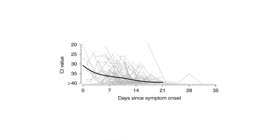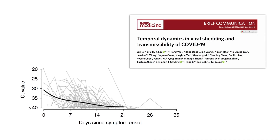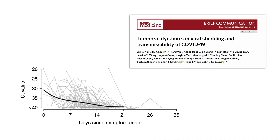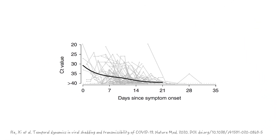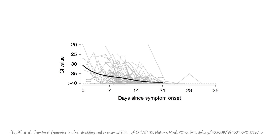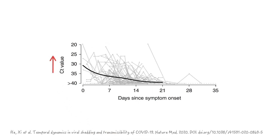Let's look at the temporal trend of this viral shedding. This graph is taken from a paper by Gabrielle Leong and co-workers published in Nature Medicine. On the x-axes are days since symptom onset, and on the y-axes are cycle threshold values. The fewer PCR cycles are necessary to detect viral RNA, the lower the CT value, meaning more viral shedding.